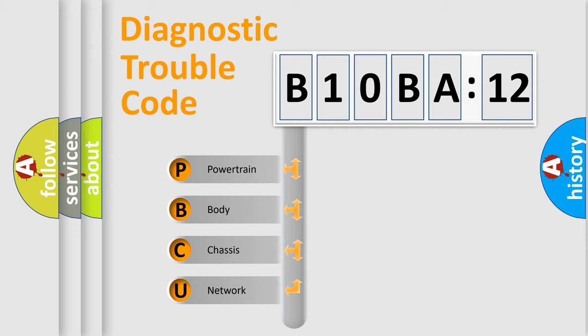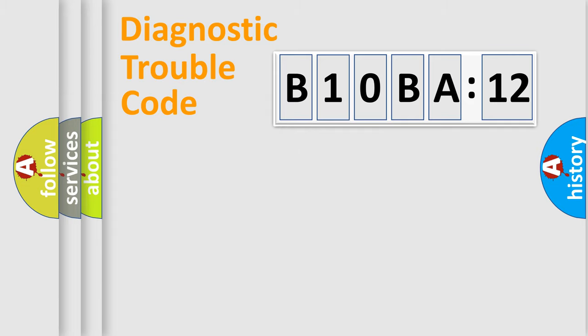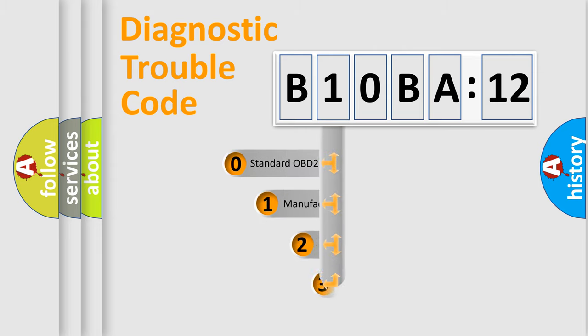We divide the electric system of an automobile into four basic units: Powertrain, Body, Chassis, and Network. This distribution is defined in the first character code.